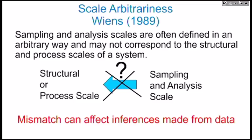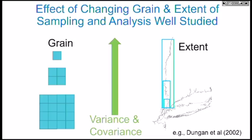It's possible that the sampling and analysis scale is mismatched to the structural or process scale. That's a phenomenon known as scale arbitrariness, and it happens a lot. The two parts of scale in ecology that are paid attention to — grain and extent — have been relatively well studied, and their effects are pretty well known.